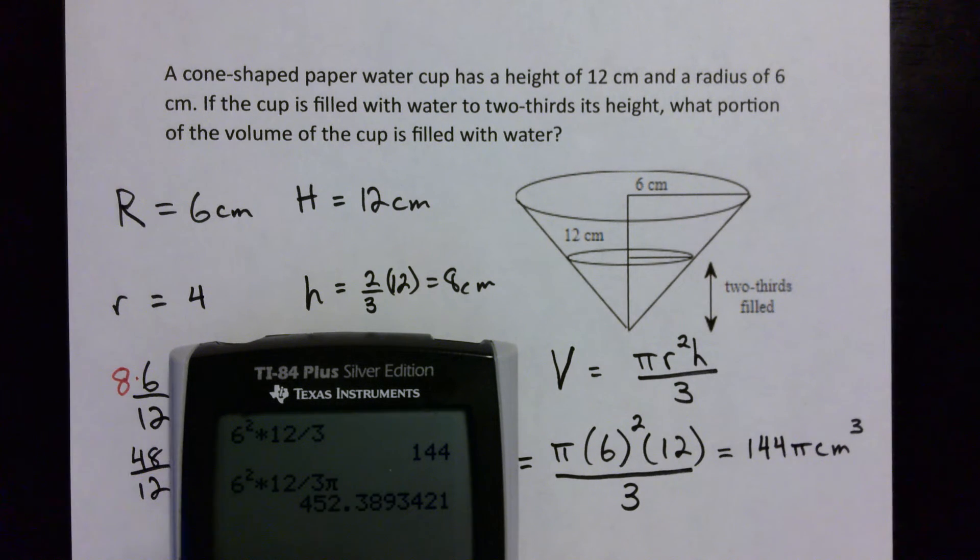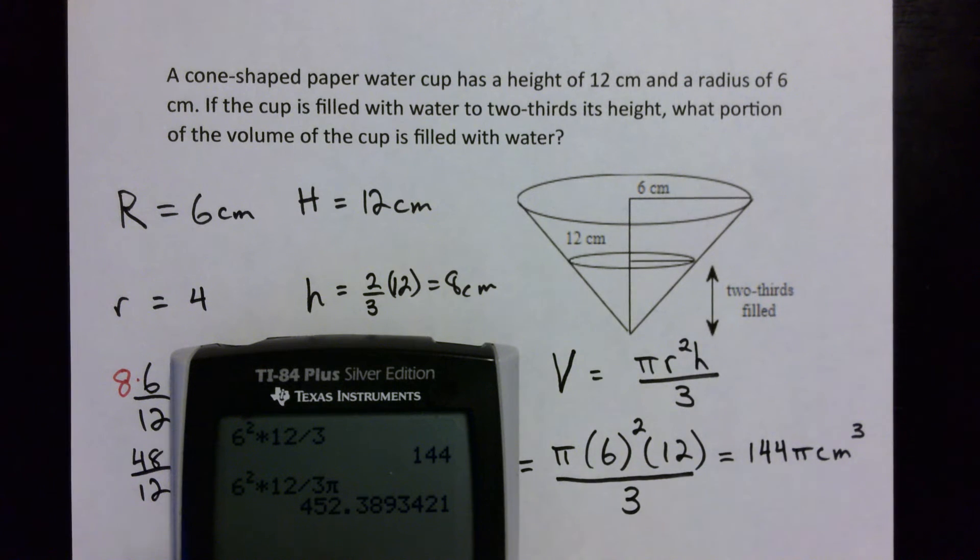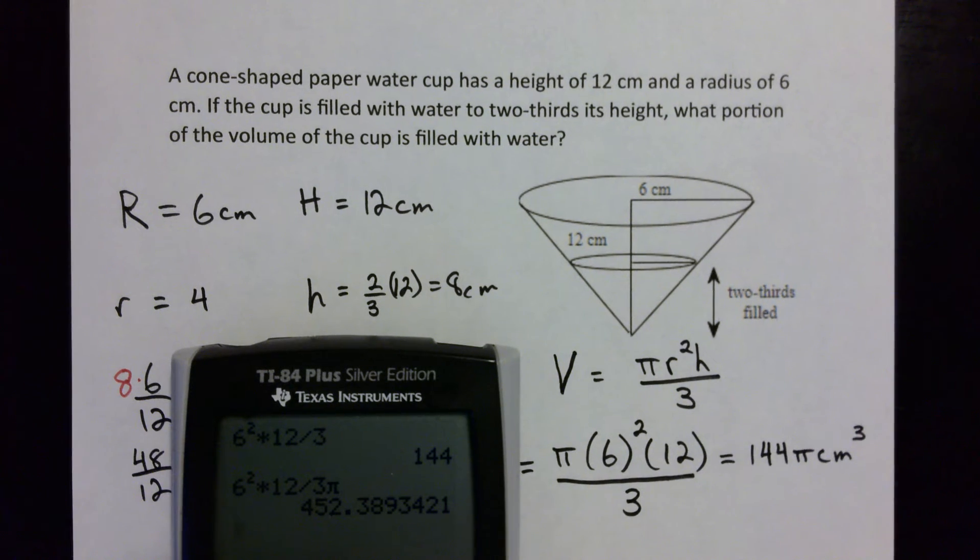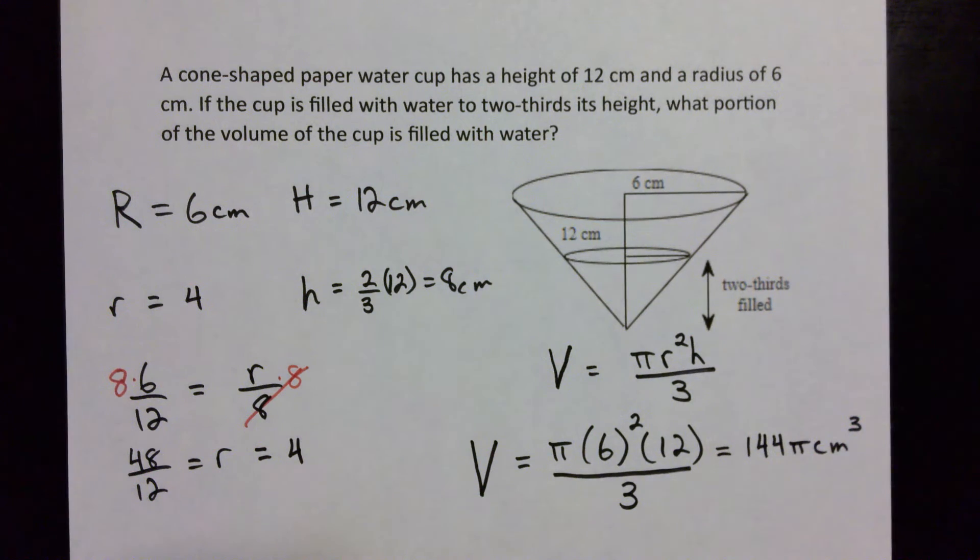So it is 144. Notice what would have happened if I would have put the π in here, it would have gotten crazy with a decimal because π is irrational, so don't include the π, just write it down as part of your answer.